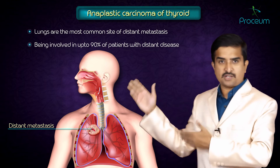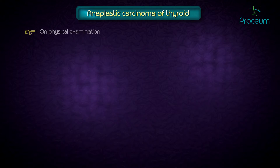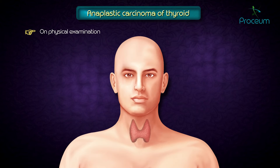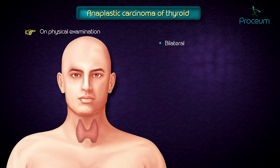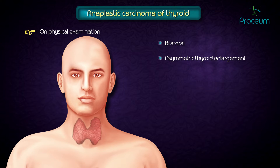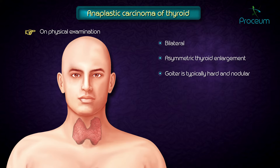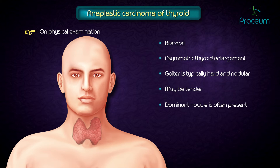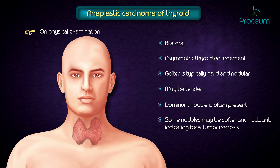On physical examination, most patients have bilateral but asymmetric thyroid enlargement. The goiter is typically hard and nodular and may be tender, with a dominant nodule often present. Some nodules may be softer and fluctuant, indicating focal tumor necrosis.